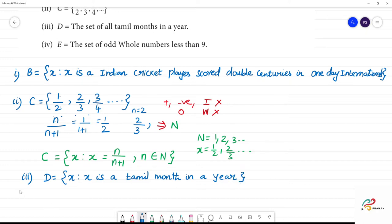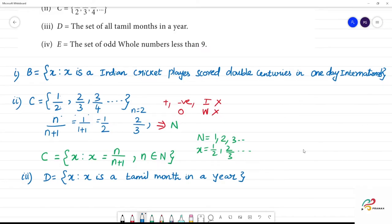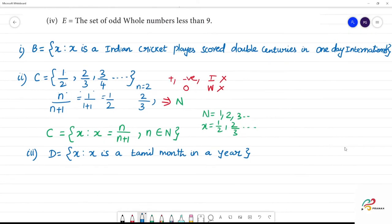Next fourth one. Fourth one is the set of all whole numbers less than 9. This is equal to x such that x is an odd whole number. Odd whole number. This is 0, even odd, positive, negative. Odd whole number less than 9.